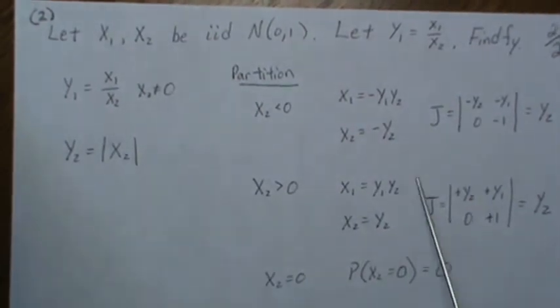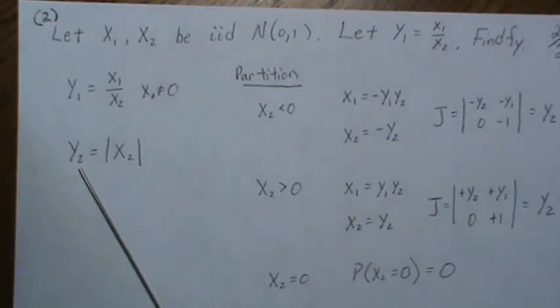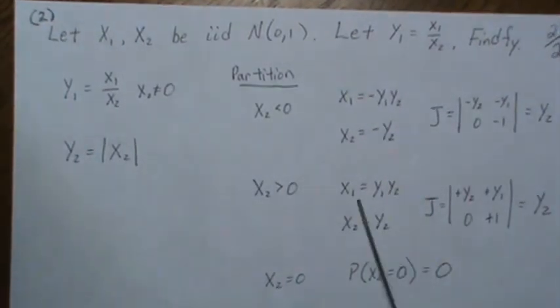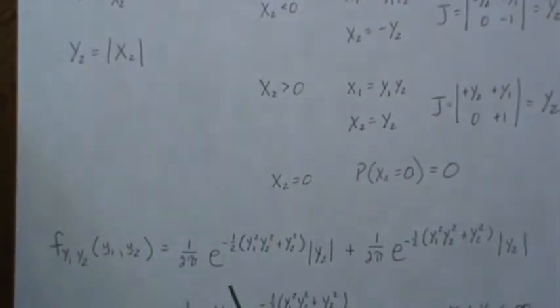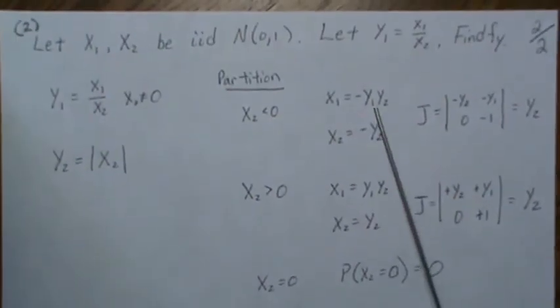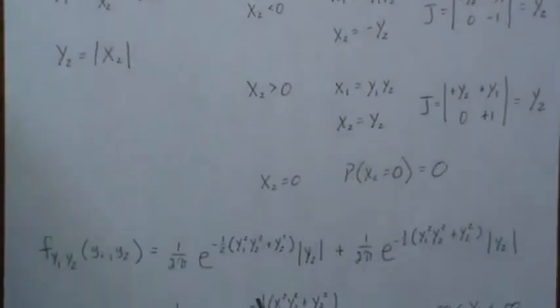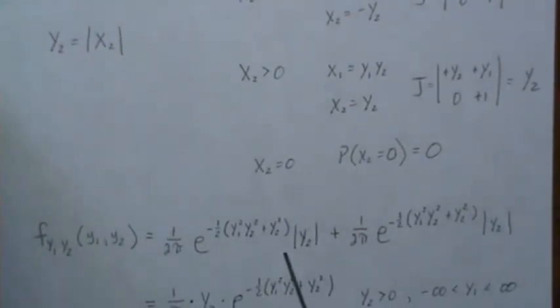We have to find the density over this range and add it to the density over this range, because for any Y2 value we pick, it's going to be in both of these regions. So the joint density of Y1 and Y2 is: we plug in these values.